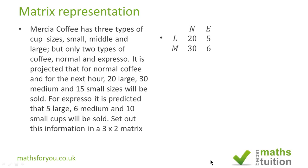That is the quantity matrix. We've sold 20 large cups of normal, 30 medium and 15 small for normal coffee. And for espresso we've got 5 large, 6 medium and 10 small. So that is the quantity matrix.